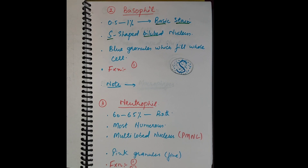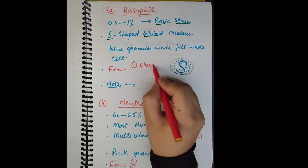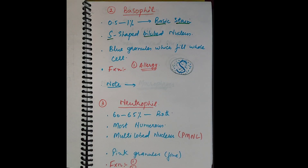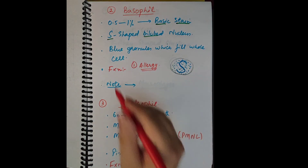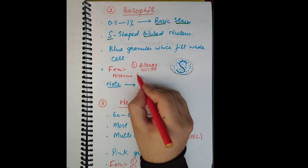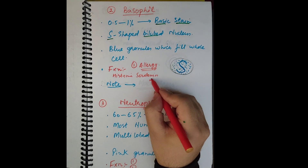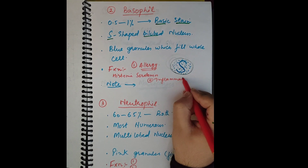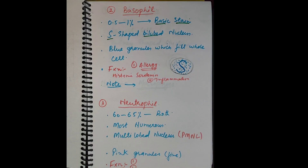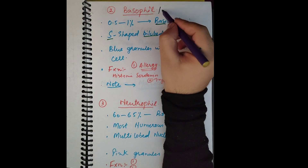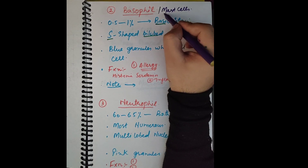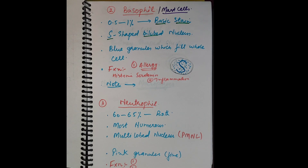Basophils are very important cells involved in allergy. They contain a lot of histamine and serotonin, and they are involved in inflammation. Inflammation is the tissue's response to injury — the swelling, redness, and pain are all symptoms of inflammation, and basophils play an important role in inflammation as well as allergy. Basophils are comparable to the mast cells of the tissue, and they are the least numerous cells of the blood.